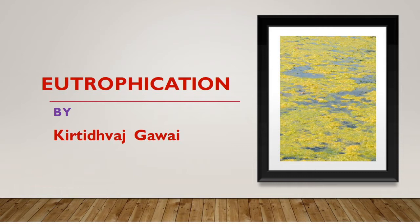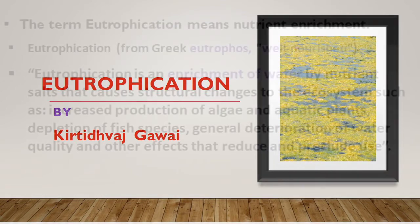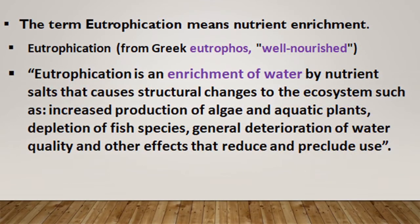Eutrophication is a term related to water pollution. This happens with water bodies like lakes, rivers, and oceans. The term eutrophication means a nutrient enrichment, and it involves an increase of nutrients like nitrate and phosphate in water bodies. Eutrophication is a word derived from the Greek word 'eutrophos,' meaning well-nourished.